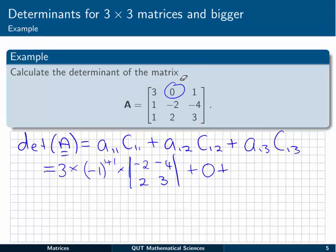Moving on to A13. A13 is that number there, 1. So I've got 1 multiplied by the cofactor 1, 3. That's going to be minus 1 to the 1 plus 3. Remember I'm getting these numbers from the subscript here, the row number plus the column number. I've got to multiply that by the determinant of the minor submatrix left when I cross out row 1 and column 3, which is going to be 1, minus 2, and 1, 2.